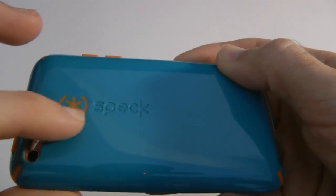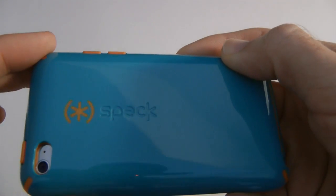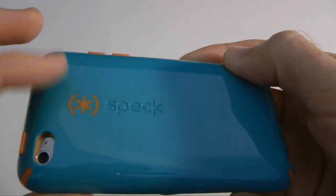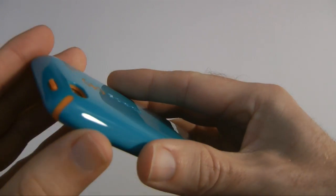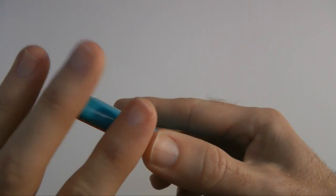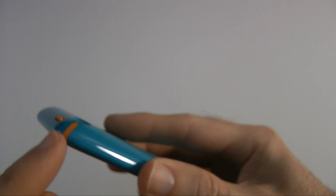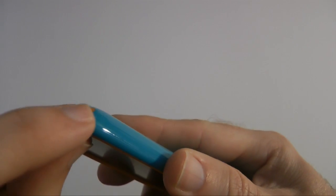The Speck Products logo is embossed on the back there and then an infill part there with the contrasting orange silicone showing through and on the sides as well. Now if you drop this and it landed on the corner, if it was all plastic it might well crack, but what they've done is they've put these slits in the side.